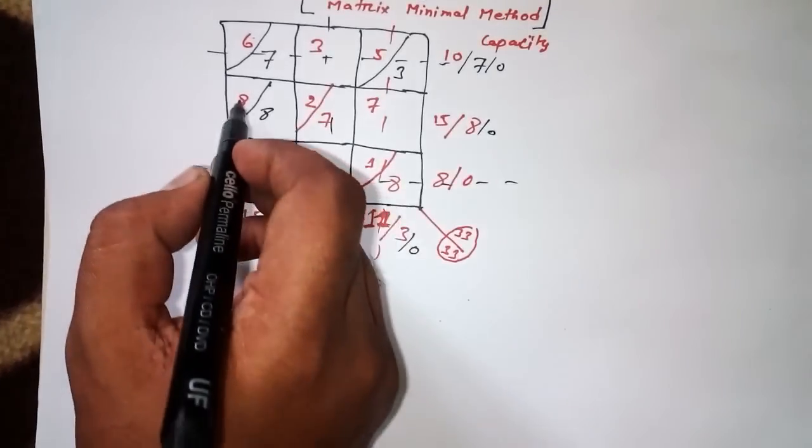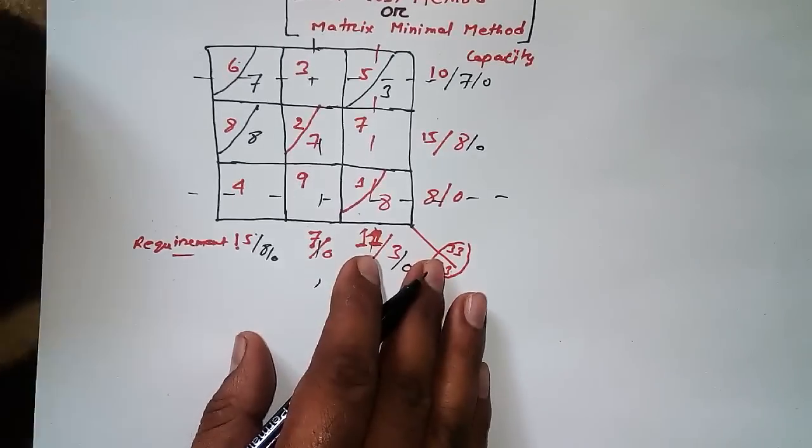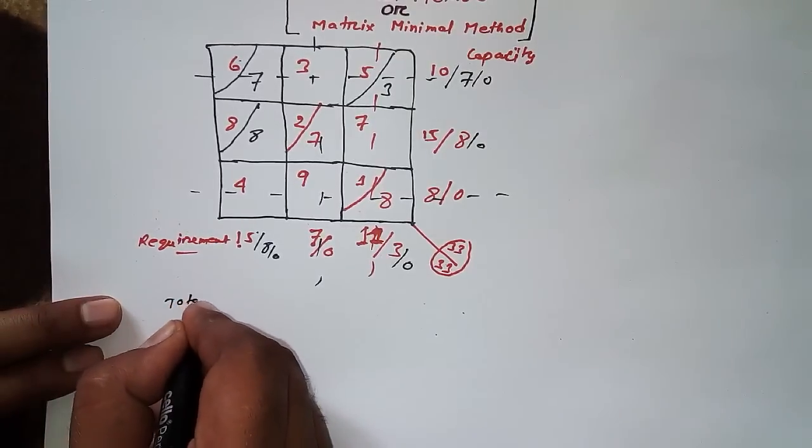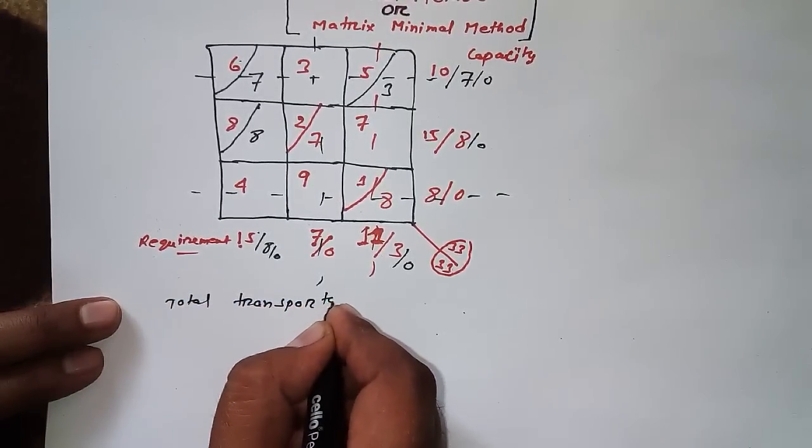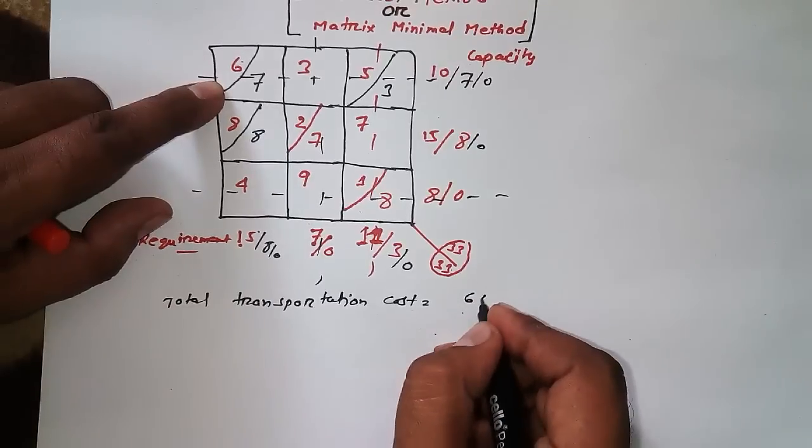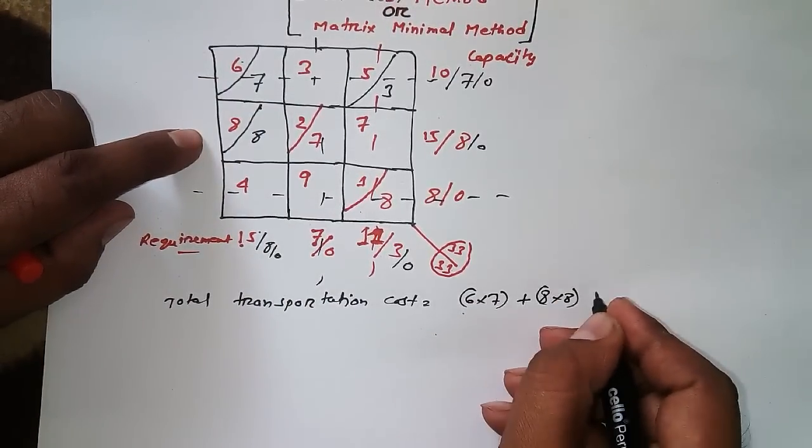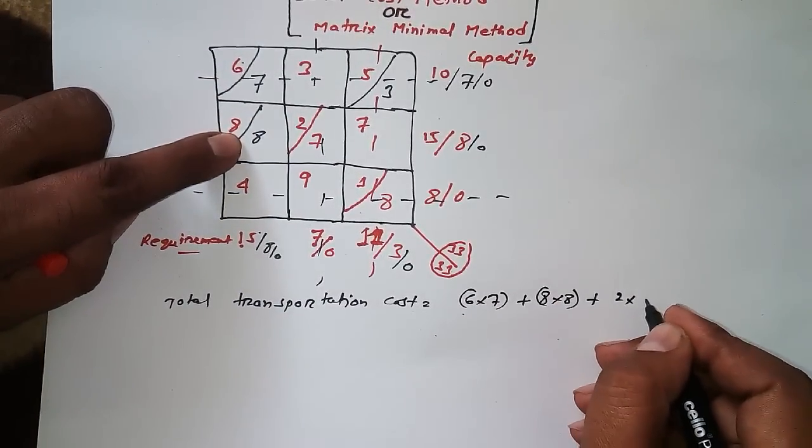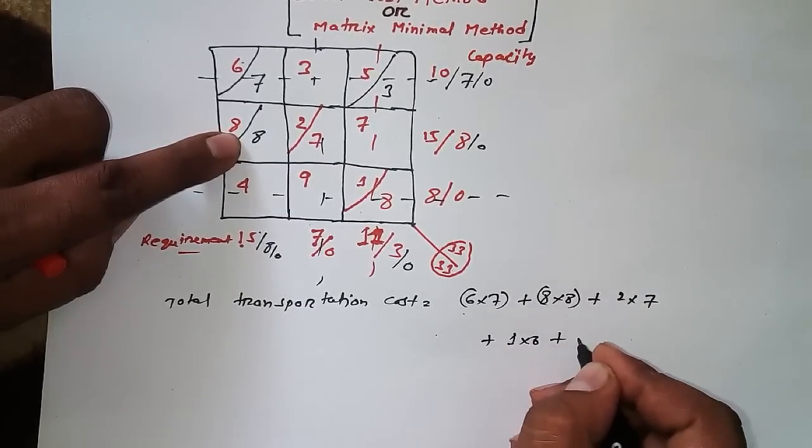Now I have to multiply these numbers where I have located values. Total transportation cost equals 6 into 7 plus 8 into 8 plus 2 into 7 plus 1 into 8 plus 5 into 3.